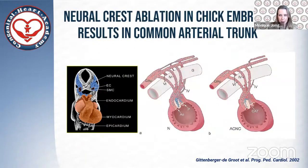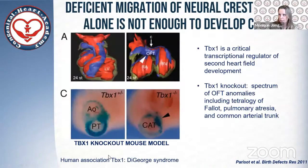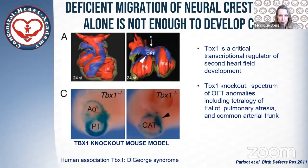For instance, if we ablate the neural crest in chicken embryos, this will result in a common arterial trunk. But also in mouse models, we have seen this occurring. However, it is very important to realize that in the past decade, we have also learned that neural crest cells are not the only cells involved in development of common arterial trunk, and in fact, common arterial trunk can occur also in the presence of intact neural crest cell contributions.